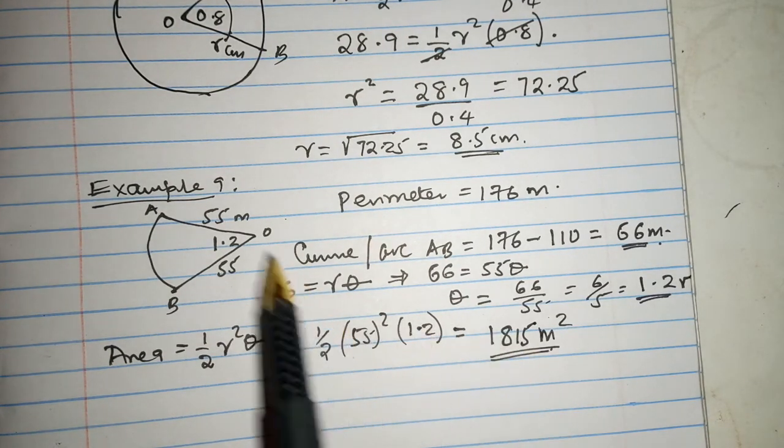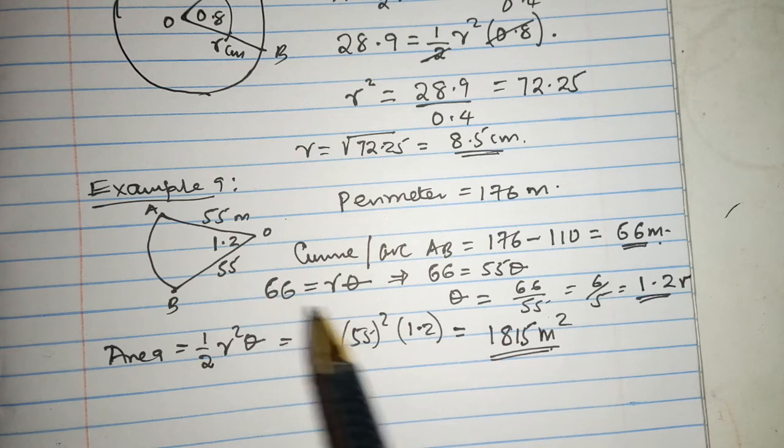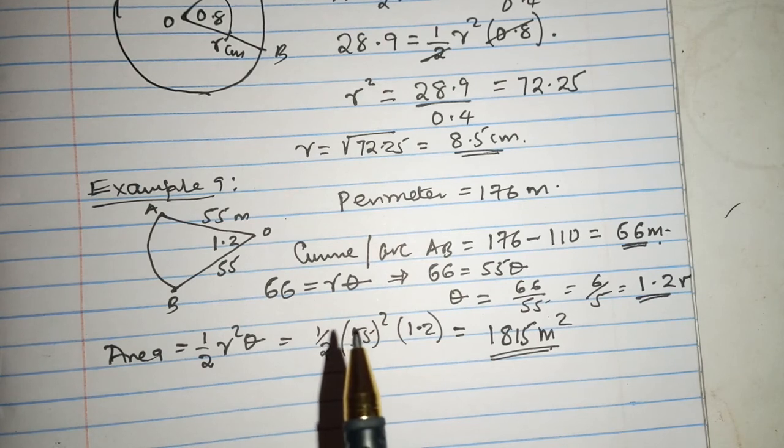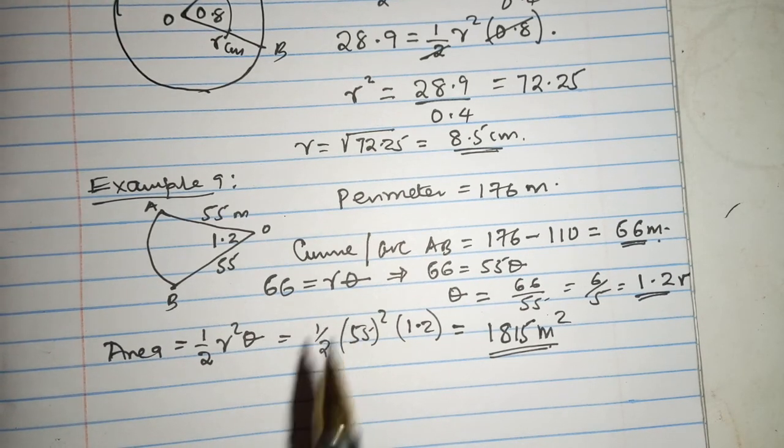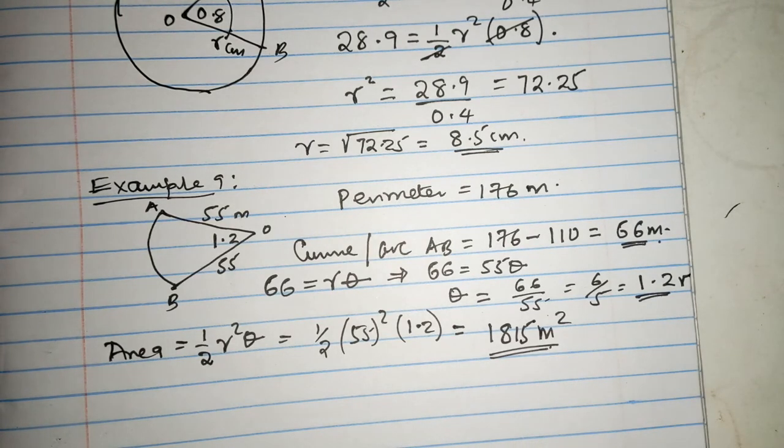Example 9 is quite demanding, but of course, if you remember what we talked about, the arc length R theta, then I don't expect anybody to face any challenge. That is the end of that particular part. In the next video, we'll be talking about the area of a segment. Alright?